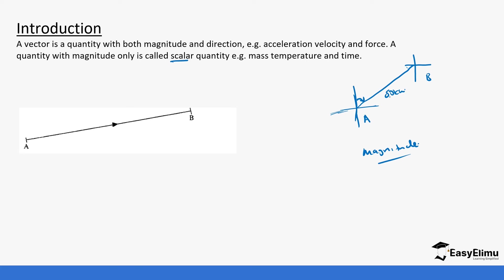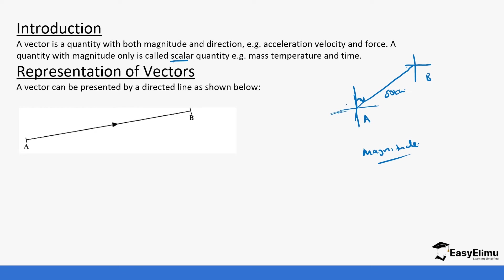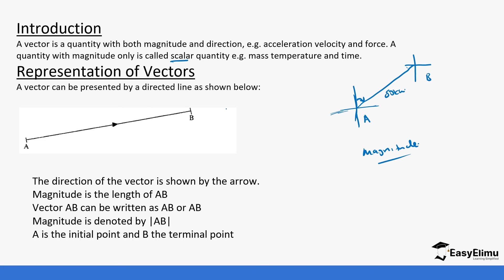The direction is north east and the distance is 50 kilometers. If we only talk about distance we are only talking about magnitude and we say that it is scalar. But if we introduce the direction, then we say that it forms a vector because it has both distance and direction.